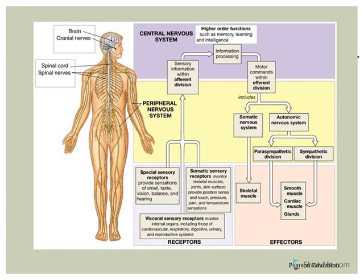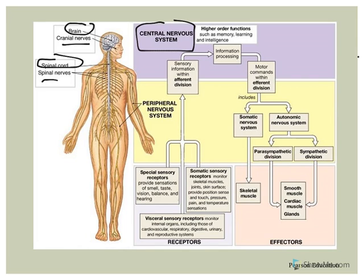You have the central nervous system, which includes the brain and spinal cord — these are centrally located. The peripheral nervous system includes our nerves: cranial nerves, which are associated with the brain, and spinal nerves, which are associated with the spinal cord, hence their names.